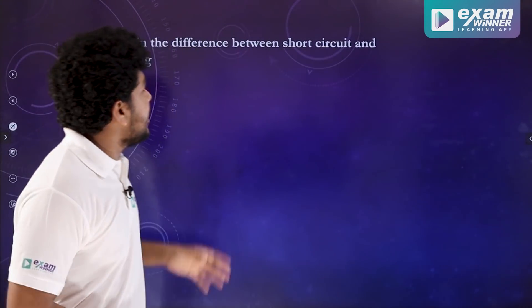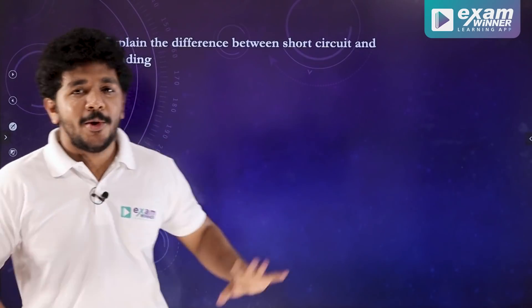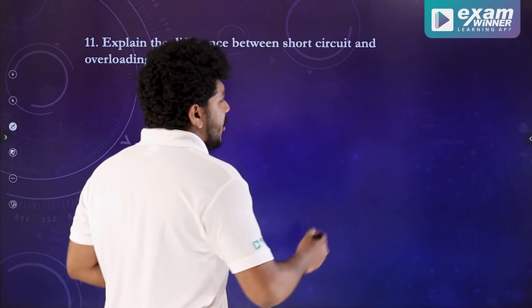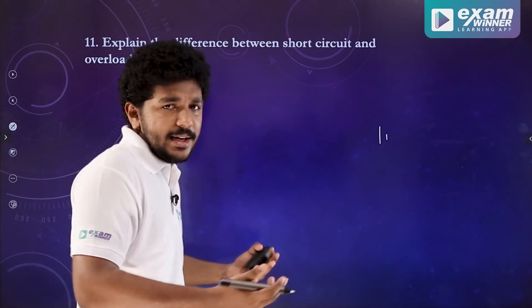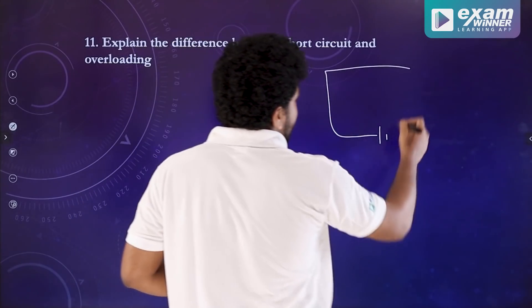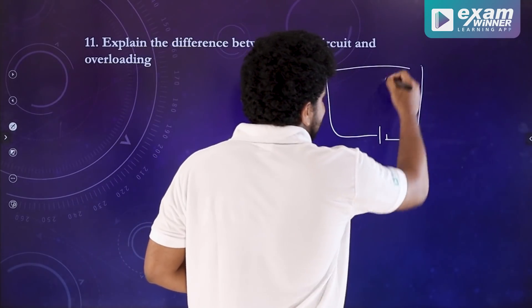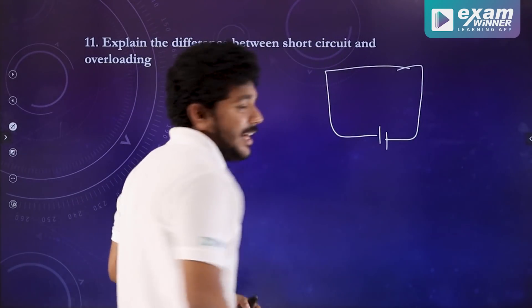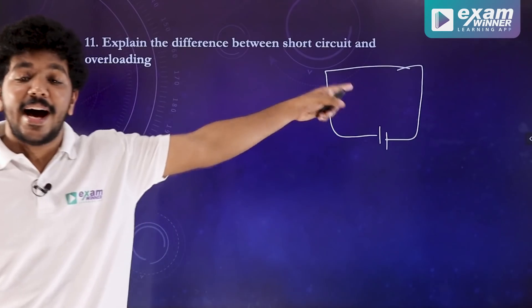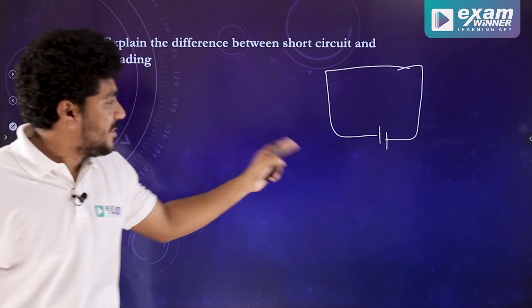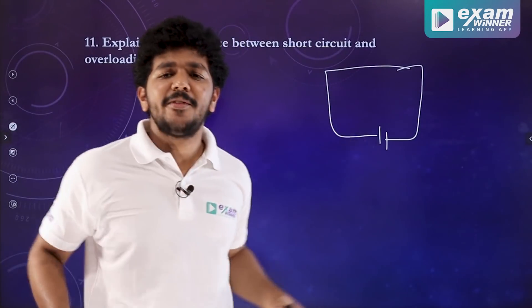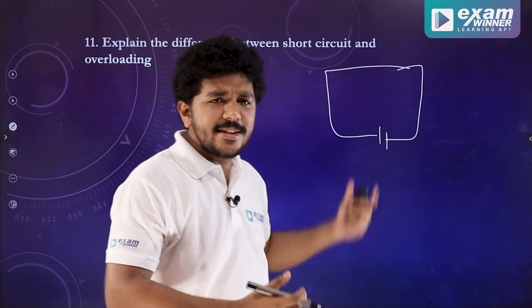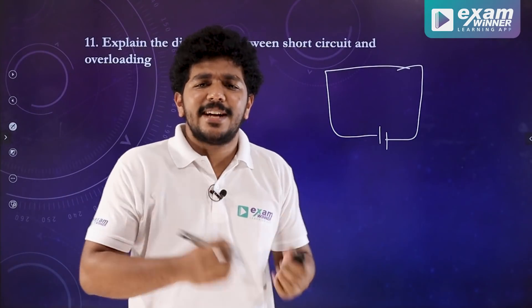Explain the difference between short circuit and overloading. Simple question. What short circuit is — we have to use a battery. Positive and negative. It is also connected to the resistance. That is short circuit.